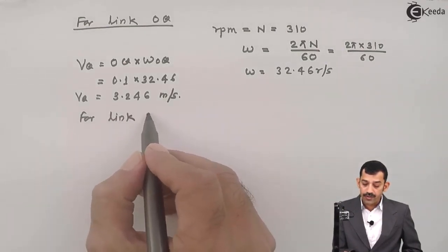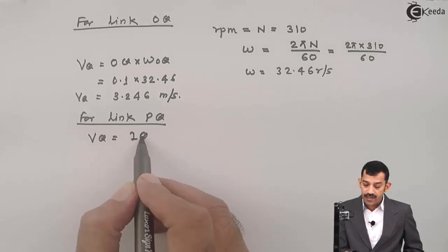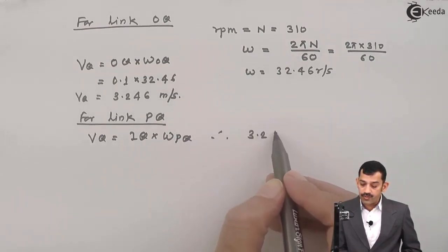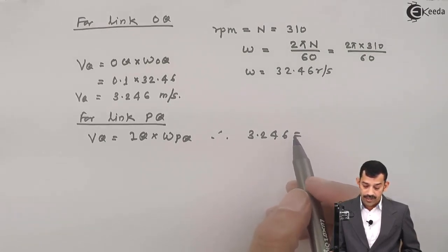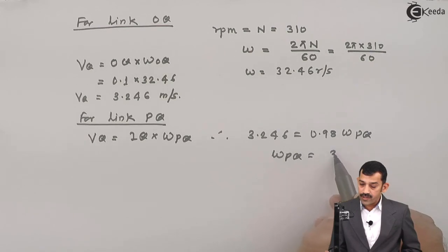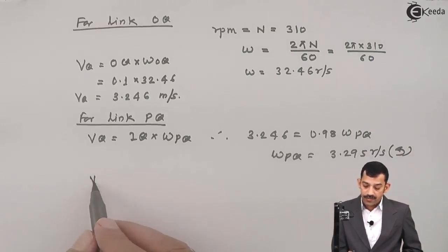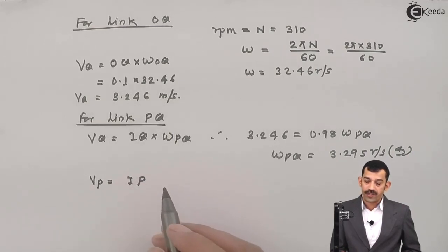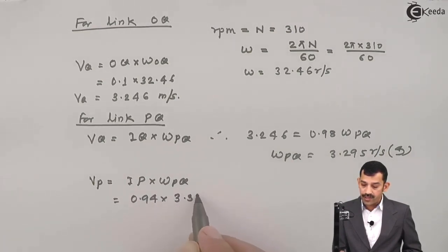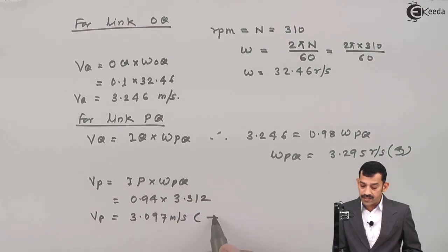For link PQ, point Q is common. Therefore VQ = IQ × omega PQ. Substituting: 3.246 = 0.98 × omega PQ. Therefore omega PQ comes out to be 3.295 radians per second, and the direction is anticlockwise. Similarly for point P: VP = IP × omega PQ = 0.94 × 3.312.